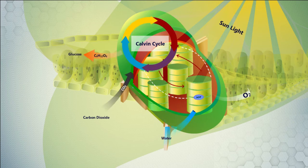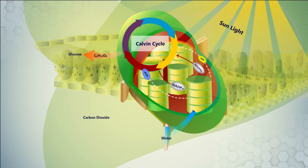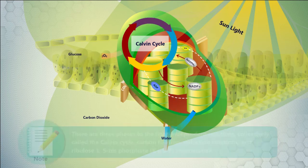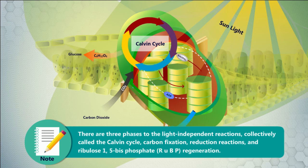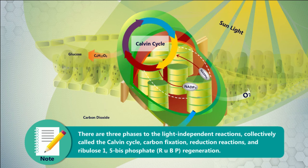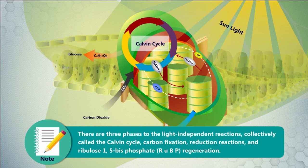The products of this reaction are sugar molecules and other organic molecules necessary for cell function and metabolism. There are three phases to the light-independent reactions, collectively called the Calvin cycle: carbon fixation, reduction reactions, and ribulose 1,5-bisphosphate (RuBP) regeneration.